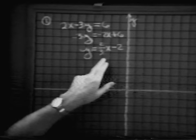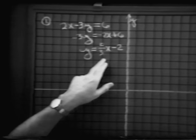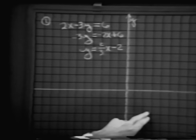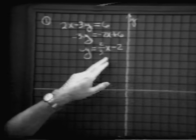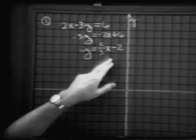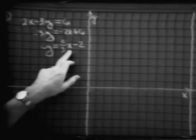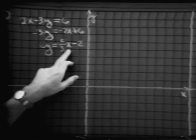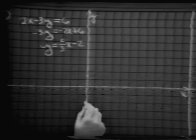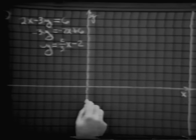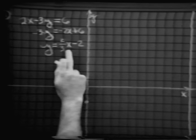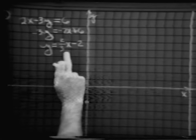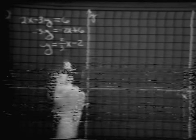Now let's look at this pattern and make the graph on our coordinate system. Let's pick out some values for x which will make it easy for us. For example, if x were 0, y then is equal to negative 2 — and I think this point is on the graph. If x is equal to 3, y then is equal to 0.